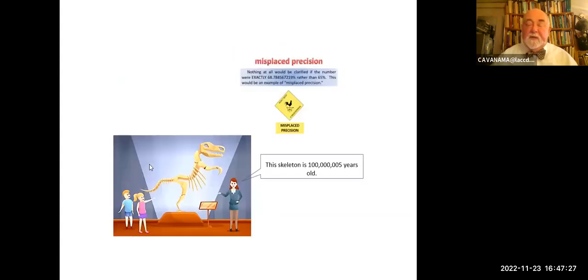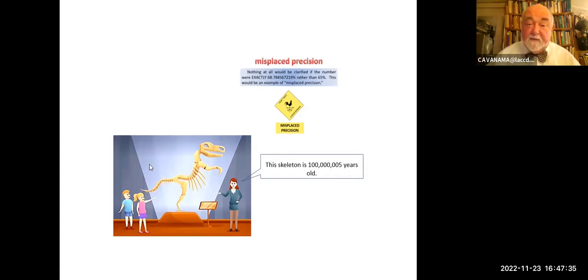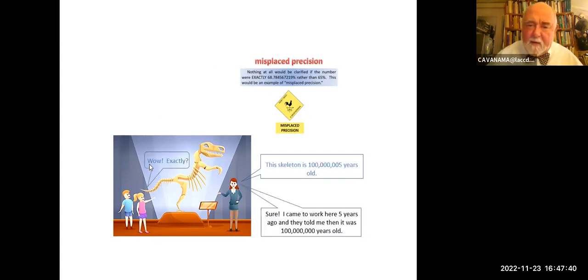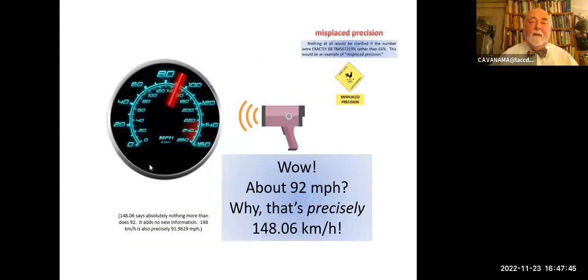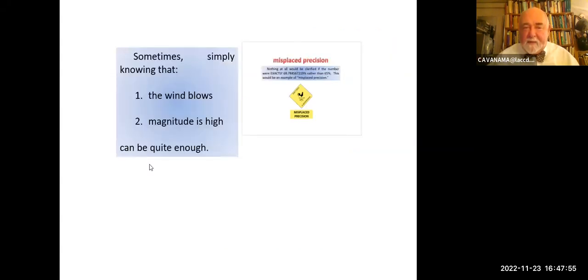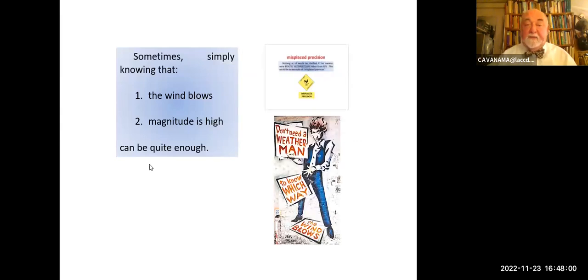Here's another hypothetical example. Students go to the Natural History Museum and see a note saying 'this skeleton is 100 million and five years old.' They ask, 'exactly? How do you know that?' 'Well, I came to work here five years ago and they told me it was 100 million years old.' About 92 miles per hour? Well, that's precisely 148.06 kilometers per hour. Sometimes simply knowing that the wind blows and the magnitude is high can be quite enough. You don't need to be a weatherman to know which way the wind blows.